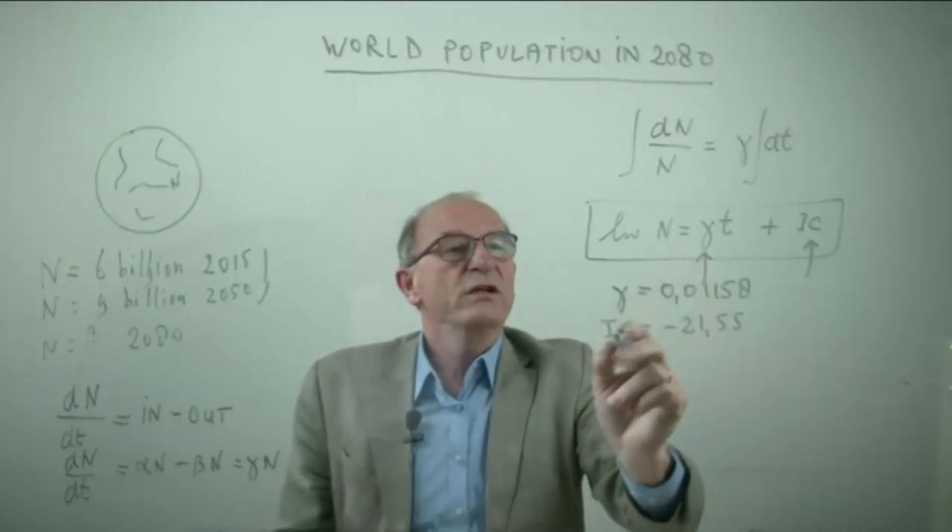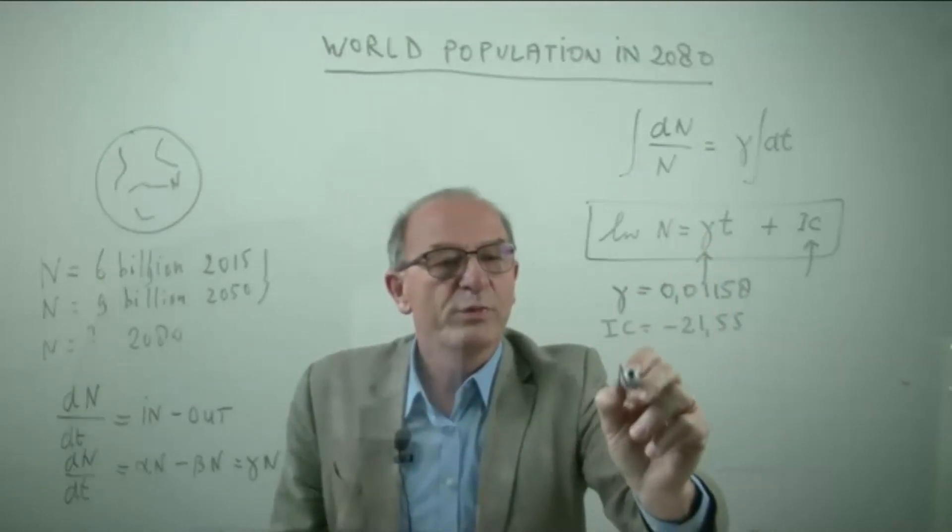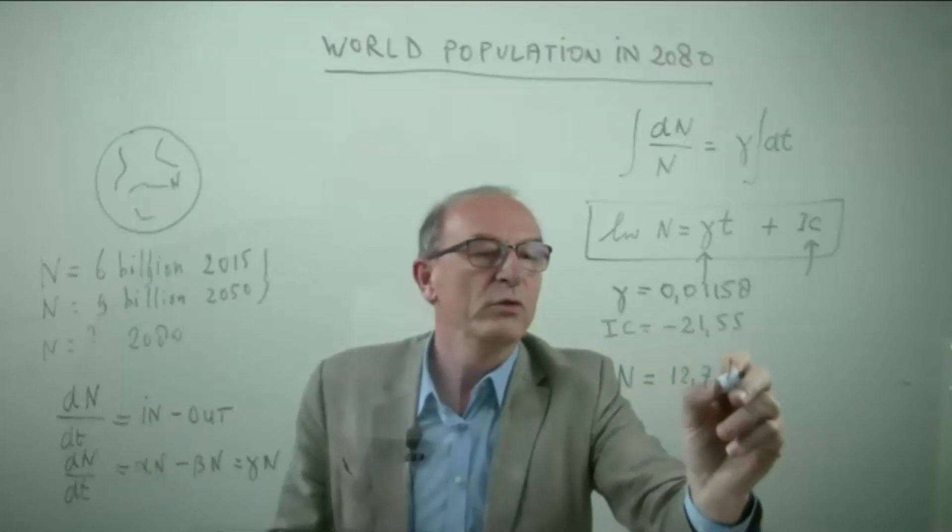If you put these numbers in and now substitute the year 2080, you get a total number of people of about 12.7 billion people on our planet.